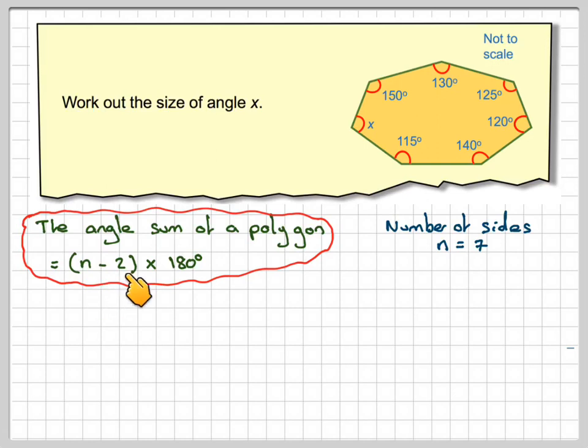this angle sum here, will be the number of sides, take away 2, times 180. So we've got seven sides, let's take away 2, times 180,